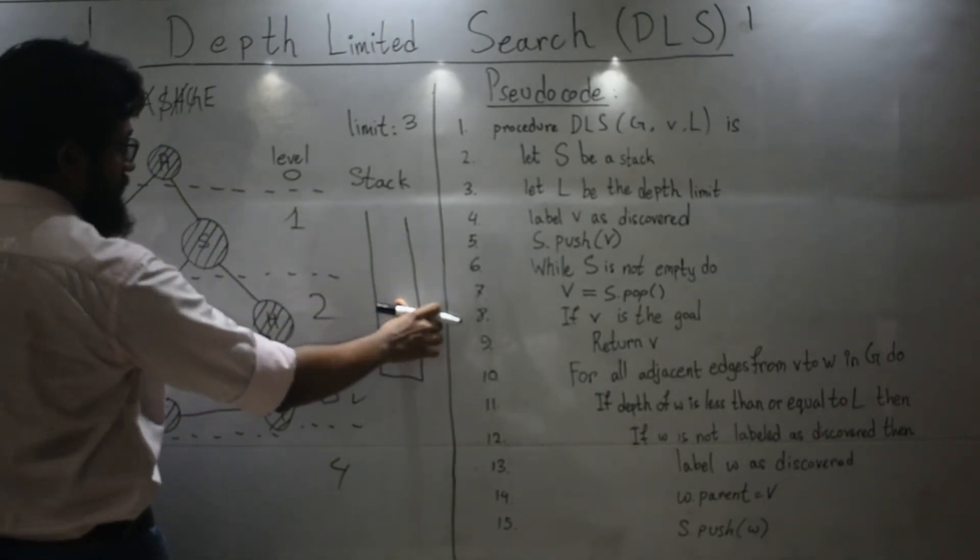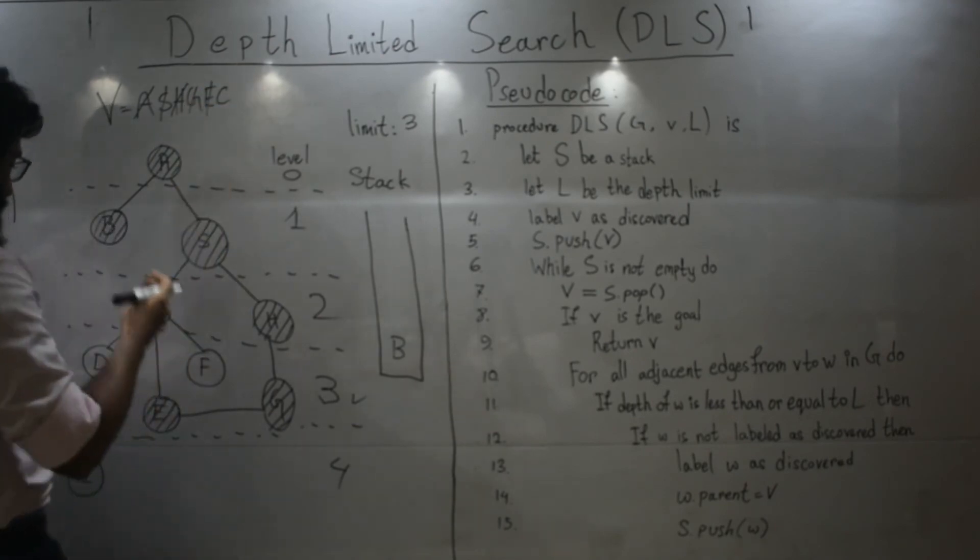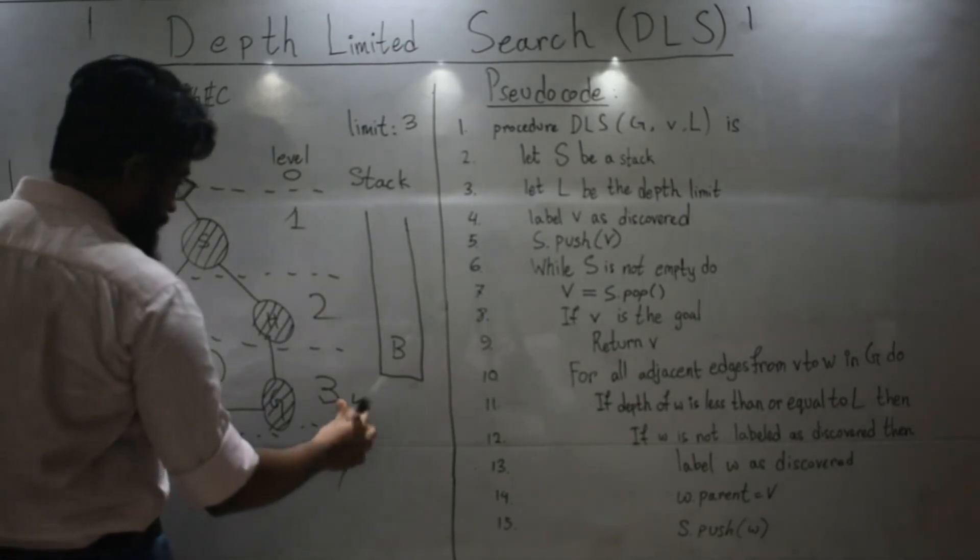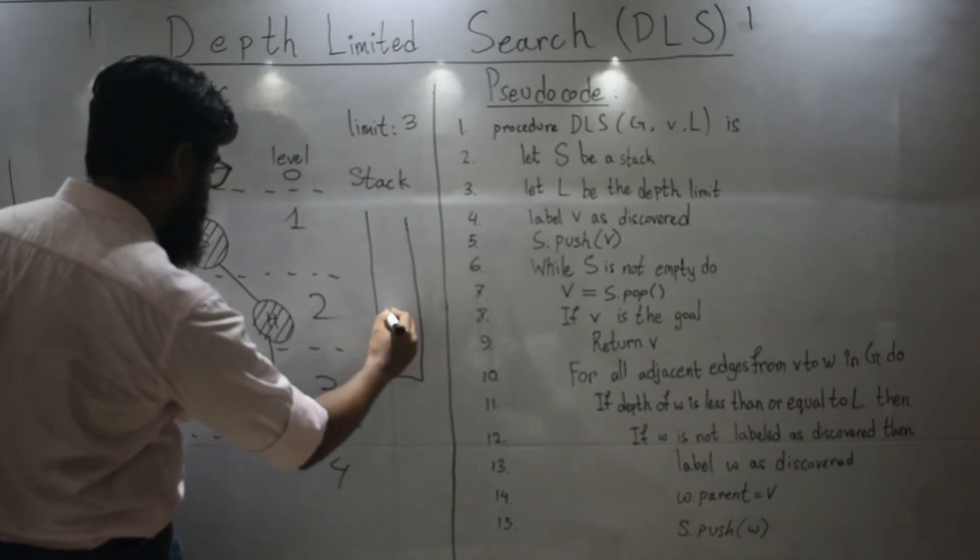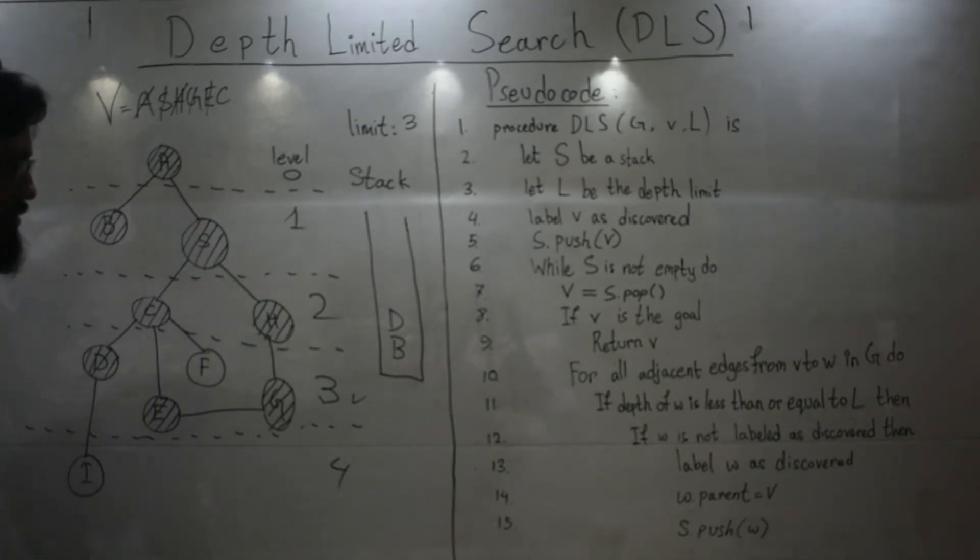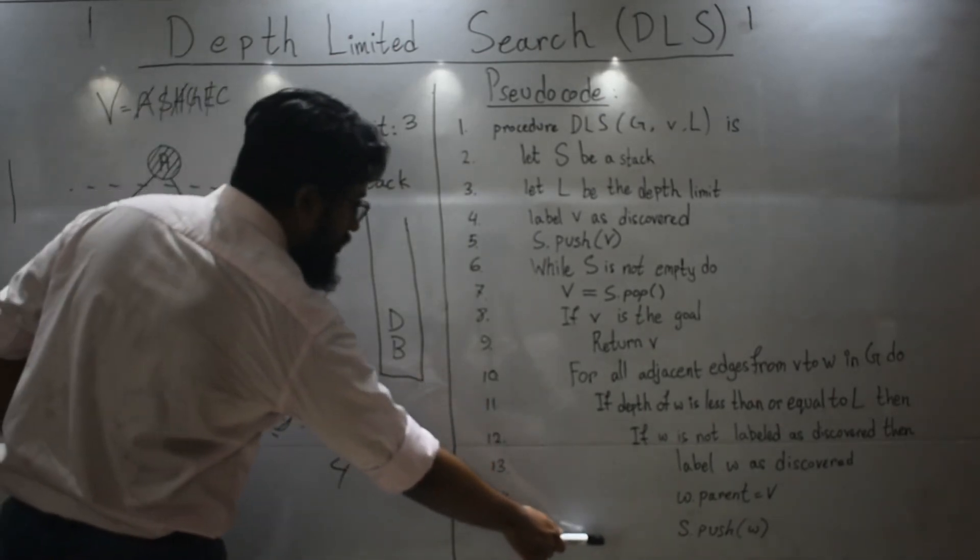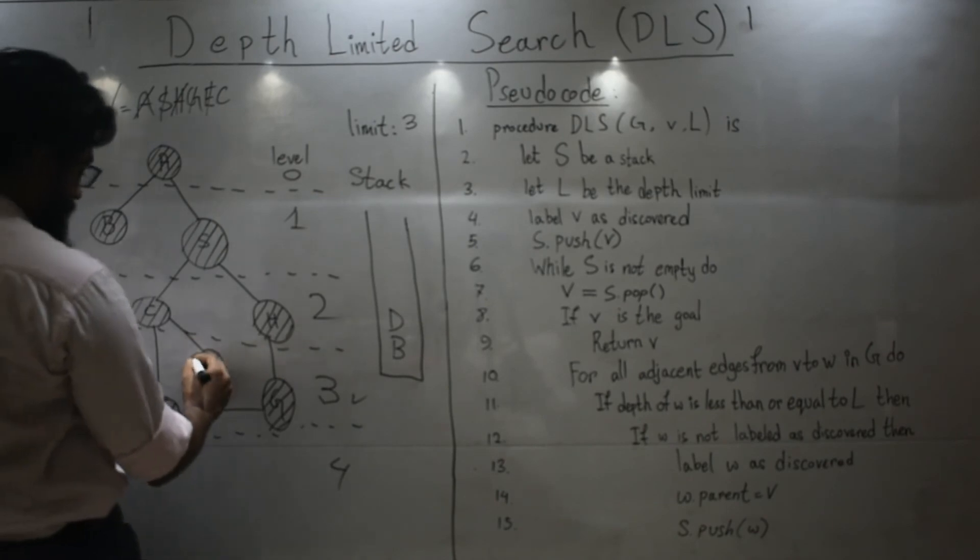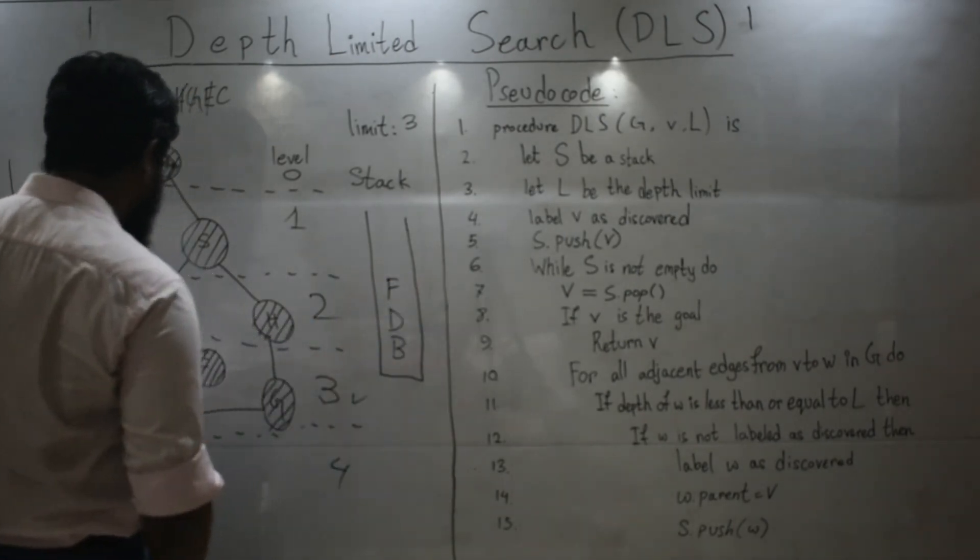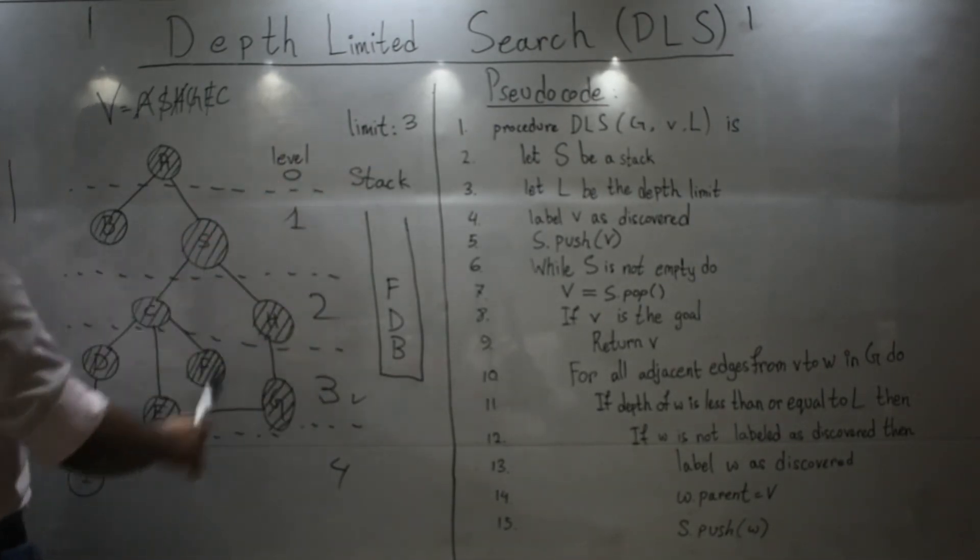So, again pop. C. C has two neighbors which are not yet visited. So, let's visit them. D. And then, F. Let's visit F. And then, push it in. And then, you will notice both of them are within my limit.